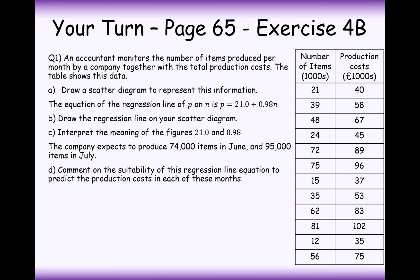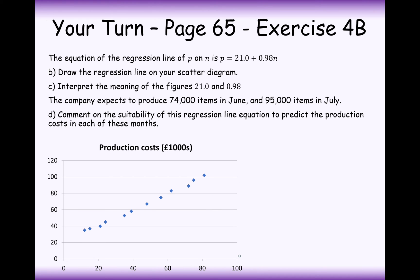Right then, well done for having a go at this question. An accountant monitors the number of items produced per month by a company together with the total production costs. So here we've got the number of items in the left-hand column, the independent variable, and the production costs which depends upon the independent variable. Part A is draw a scatter diagram to represent this information. So here's one I did earlier. The equation of the regression line is P = 21.0 + 0.98n. Draw the regression line onto the diagram.